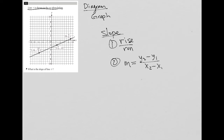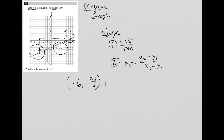So let's use that formula. I'm going to try to choose a good set of ordered pairs. I do see that we have fractions, which I don't necessarily want to deal with. Let's choose this point here and this one here — basically figuring out how much am I rising from here to there and across. Why am I choosing those two points and ignoring this one? I'll write them down: negative six, negative 27 fifths and nine, three fifths.